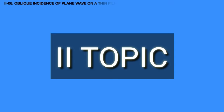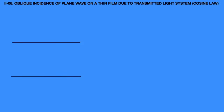The second topic is called oblique incidence of plane wave on a thin film due to transmitted light system. Consider ABCD, a thin film of thickness T and refractive index mu, enclosed by air medium. Consider a wavelength lambda of plane wave of light incident obliquely from P on the upper surface of the film AB at point Q.